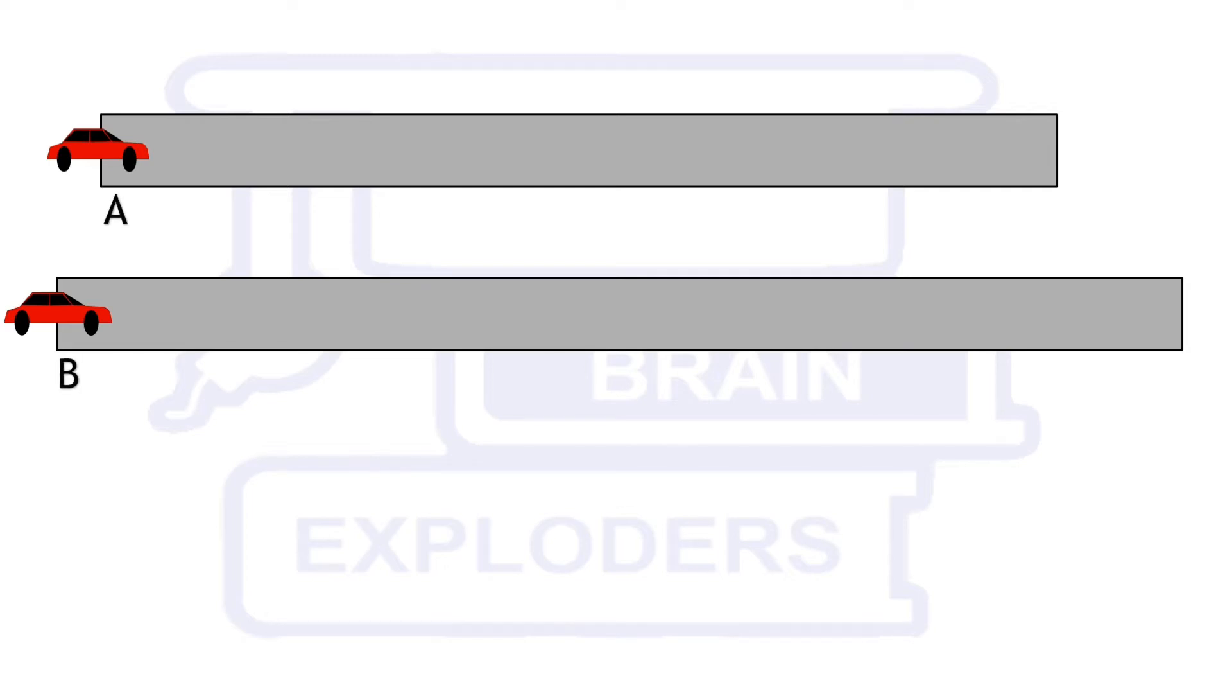Suppose there is a car B behind car A which travels with a greater velocity than that of car A, so it overtakes car A after some time.